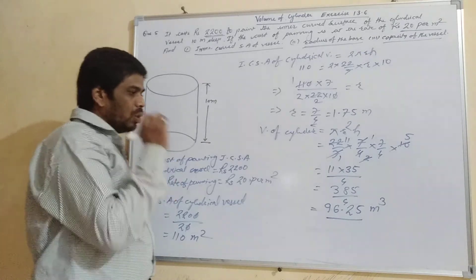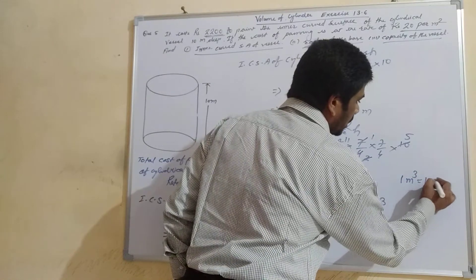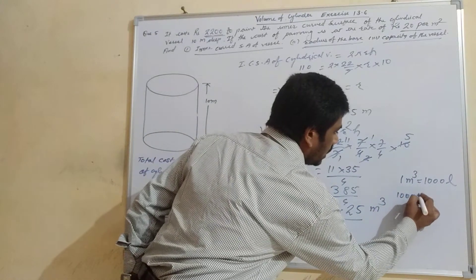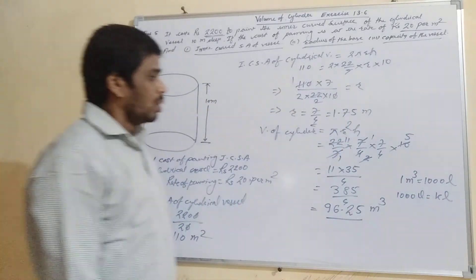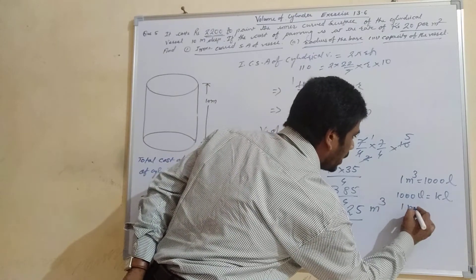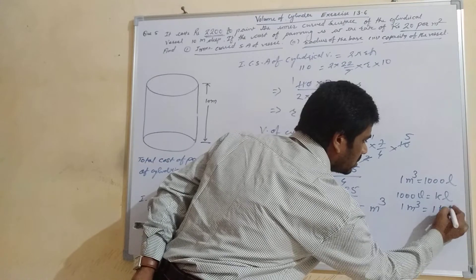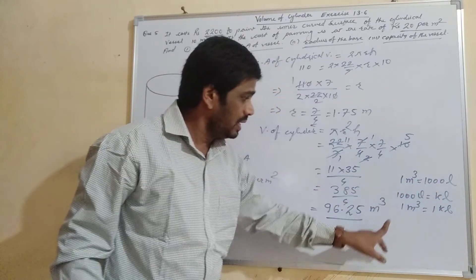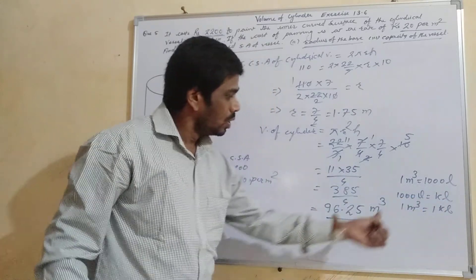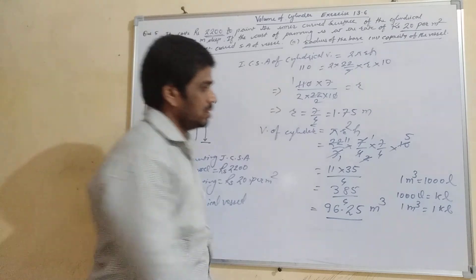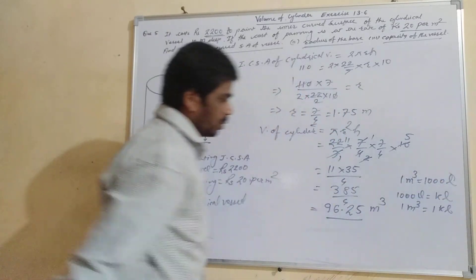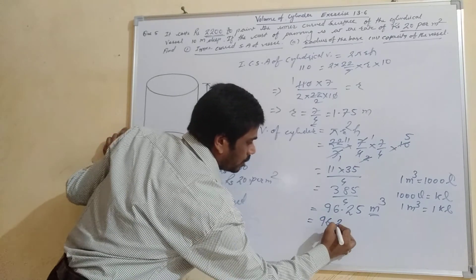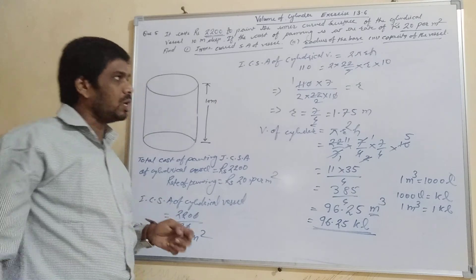Now we have to find the capacity. We know that 1 cubic meter equals 1000 liters, and 1000 liters equals 1 kiloliter. Therefore 1 cubic meter equals 1 kiloliter. So we can replace cubic meters with kiloliters, which means the capacity of the vessel is 96.25 kiloliters.